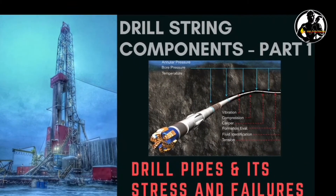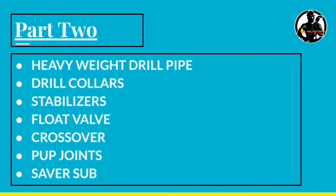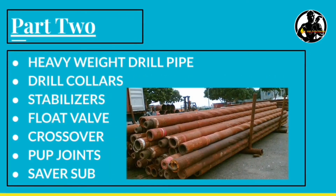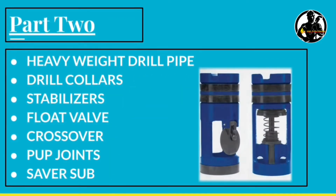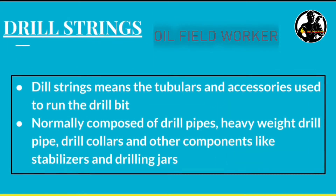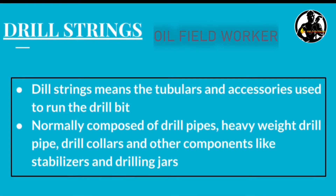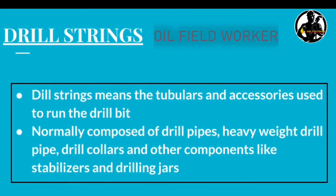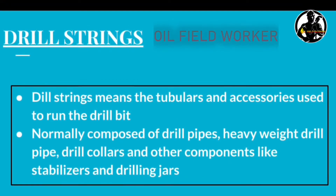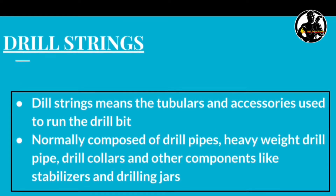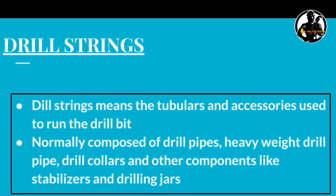Part two will include heavyweight drill pipe, drill collars, stabilizers, float valve, crossover, and sub joint savers. Now let's start the video. The drill string refers to the tubulars and accessories used to run the drill bit, and it is normally composed of drill pipe and other components.